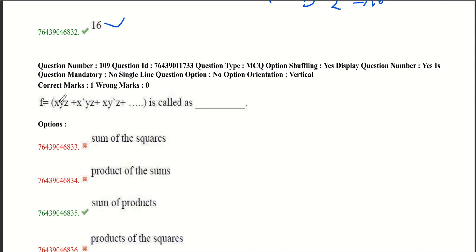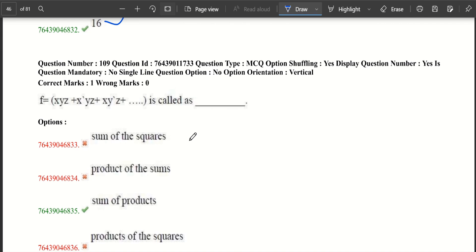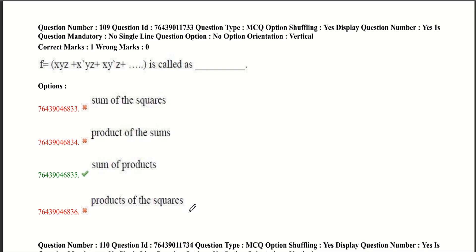And now let's move to the next question. F equals to xyz plus x bar yz plus xy bar z and continues is called as dash. Sum of the squares, product of the sums, sum of products, products of the squares. First, we have to understand the difference between SOP and POS.